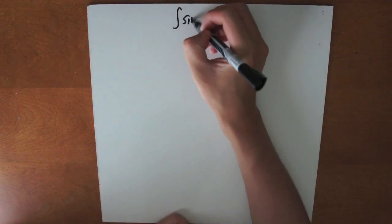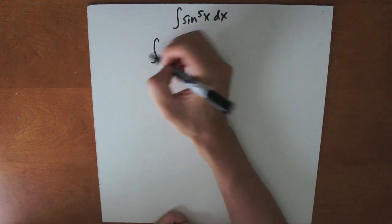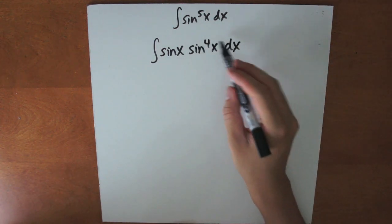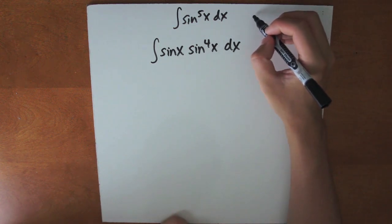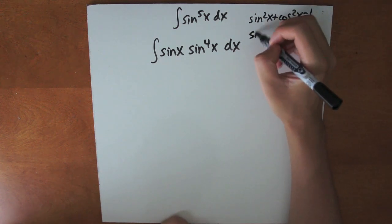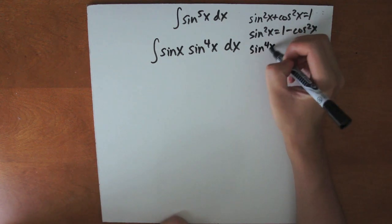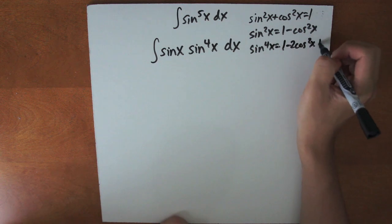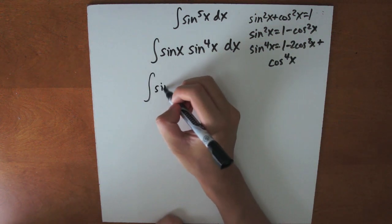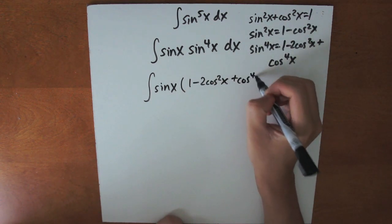Now let's try the integral of sine to the fifth x dx. Since sine is an odd power, we must siphon off one sine, so it becomes the integral of sine x times sine to the fourth x dx. We must write this in terms of cosines using the identity sine squared x plus cosine squared x equals 1, therefore sine squared x equals 1 minus cosine squared x. Squaring both sides, we get sine to the fourth x equals 1 minus 2 cosine squared x plus cosine to the fourth x. Plugging back in, we get the integral of sine x times (1 minus 2 cosine squared x plus cosine to the fourth x) dx.